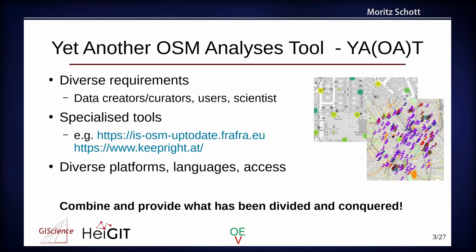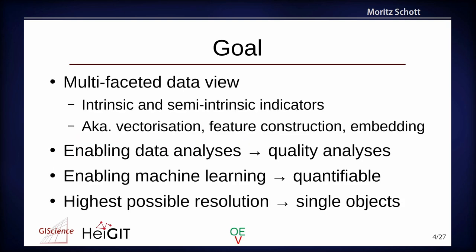The main goal is to provide a multifaceted data view. We want to combine intrinsic and semi-intrinsic indicators on the data. We call this vectorization, but there are other words for it — some people call it feature construction, others call it embedding. We want to enable data analysis with this tool, mostly in the direction of quality analysis, but it's actually up to you what you use the tool for. We want to enable machine learning so we need quantifiable results. And we want it at the highest resolution — on a single OSM object, which is the highest possible resolution.